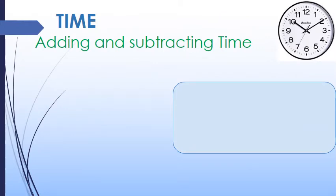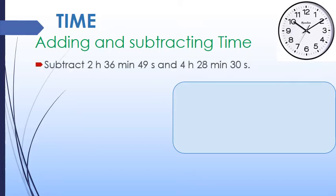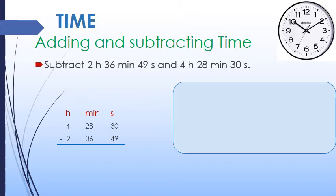Let's take another example to understand regrouping more clearly. In this example, we have to subtract 2 hours 36 minutes 49 seconds from 4 hours 28 minutes 30 seconds. First of all, we will make 3 columns of hour, minutes, and seconds, then put 4 hours 28 minutes 30 seconds at the top and 2 hours 36 minutes 49 seconds at the bottom.